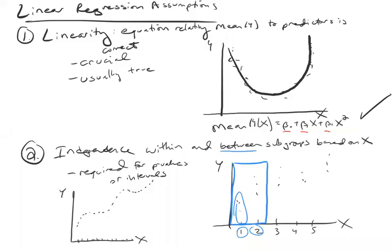The independence assumption does not hold in this case. I'll write a no over here because we have dependence between subgroups based on x. So here it looks like we have just one data point for each day, so each subgroup based on x has only one value in it.